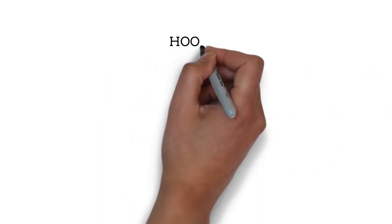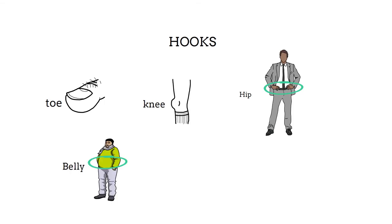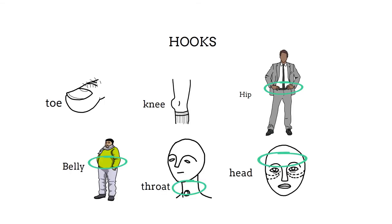Let's define the hooks as toes, knees, hips, belly button, throat, and forehead. To make it simple, we are using only six hooks, starting from the toes to the forehead.